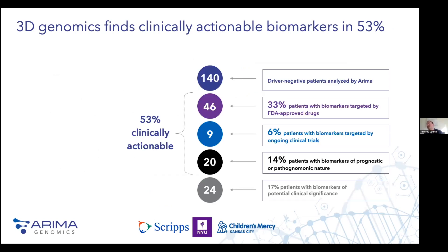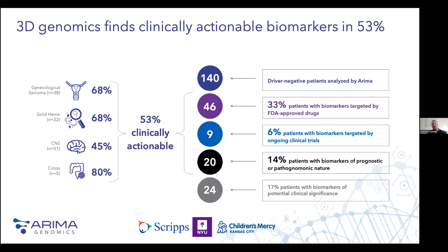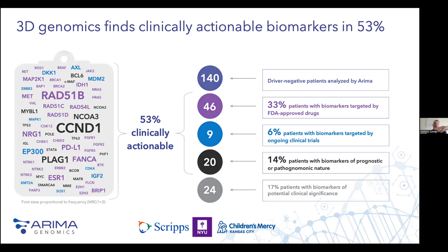Over the past year and a half, we've analyzed 140 patient tumors that were previously tested with conventional sequencing and had no clinically actionable genetic driver. Strikingly, in about 33% of those patients, we can find a gene fusion or proximal fusion that implicates a gene that is the target of an FDA-approved therapy. Some biomarkers are diagnostic or prognostic, some are targets of drugs in clinical trials. A lot of this data comes from sarcomas, solid heme tumors, CNS tumors, and colorectal tumors, with a whole range of different biomarkers such as NTRK1 and FGFR1.